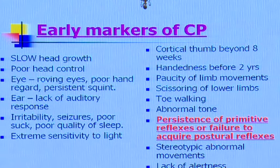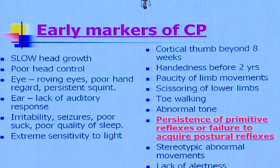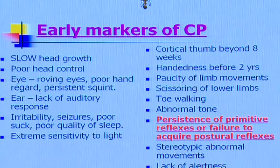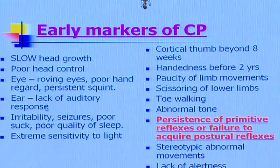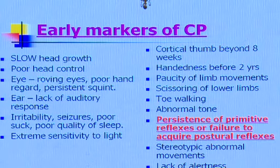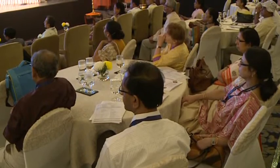Neurologists and developmental pediatricians look for certain early markers suggesting a child may develop cerebral palsy: slow head growth, poor head control, roving eye movements or poor hand regard, lack of auditory response, irritability, seizures, poor feeding, poor quality of sleep, and extreme sensitivity to light.